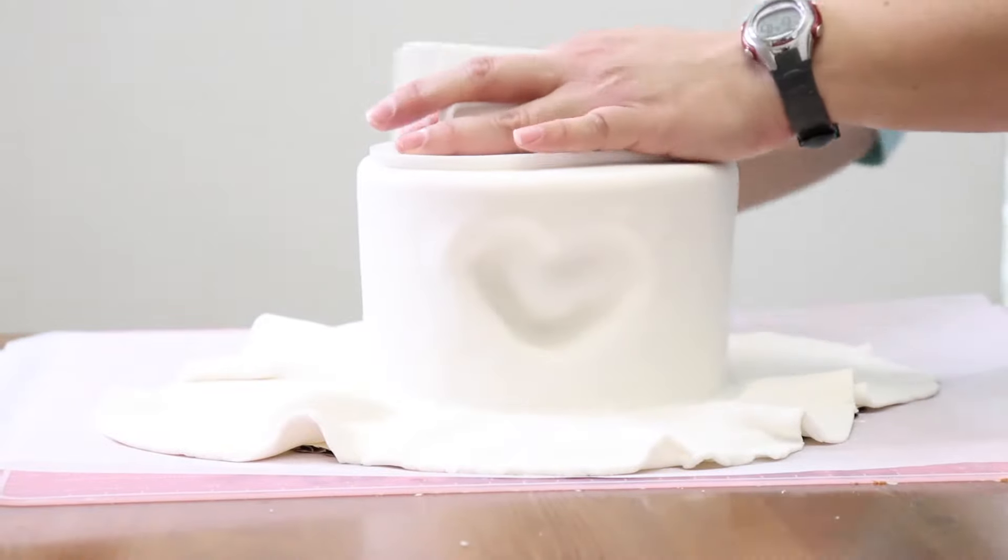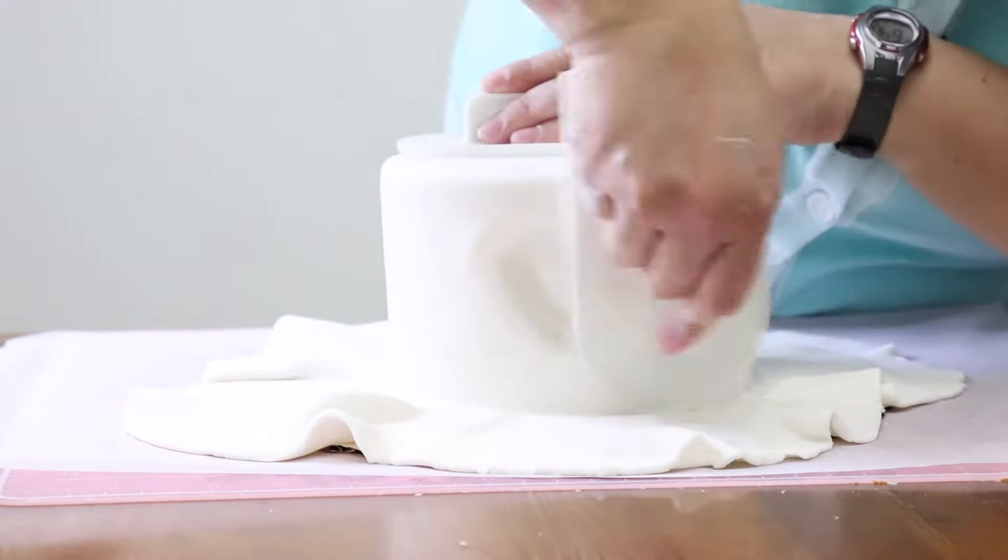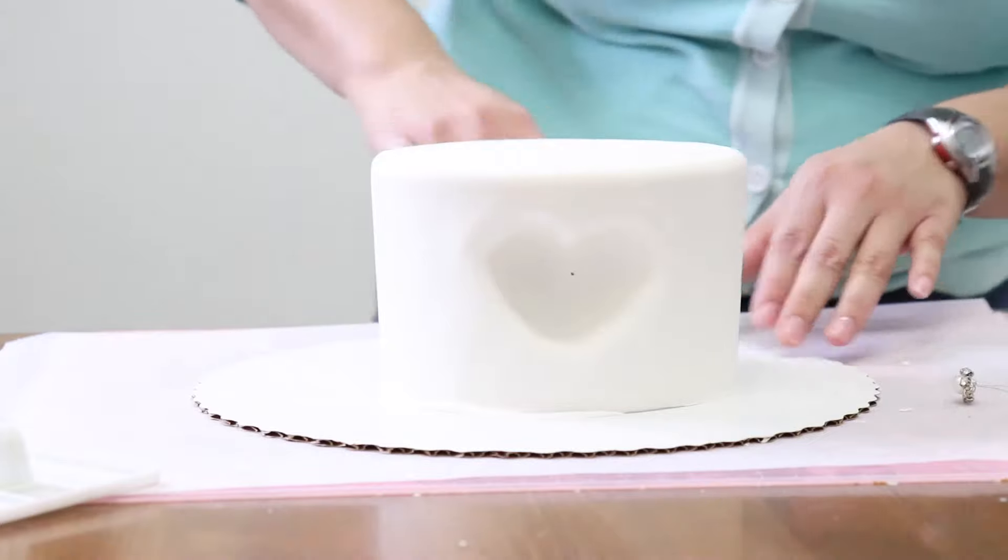Smooth out the fondant with the smoothers, and also mark where you're going to be cutting the excess of the fondant.